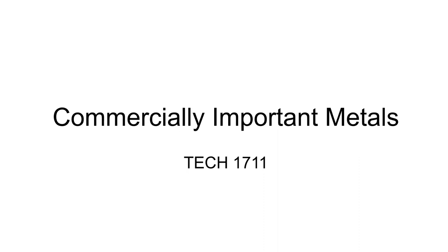Now that we know what metals are, let's start talking about purchasing metals for a particular purpose. You can't just go to the periodic table and order aluminum. In fact, it's hard to actually order something like commercially pure aluminum — it's much more likely that you would buy some kind of an alloy of aluminum.